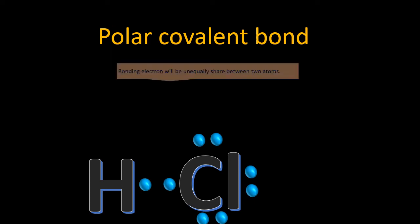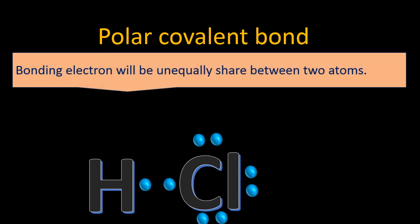Polar covalent bonds are formed when bonding electrons are unequally shared between two atoms. This means that the pair of electrons being shared will spend more time near the highly electronegative element compared to the other element. An example is hydrochloric acid (HCl), in which hydrogen is the electropositive element and chlorine is the electronegative element.